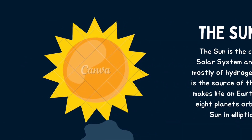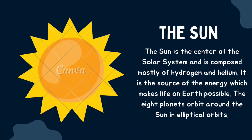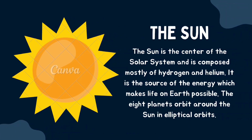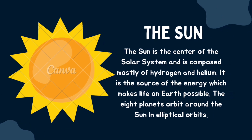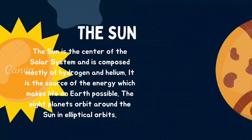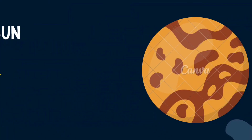Now let's learn about the sun. The sun is the center of the solar system and is composed mostly of hydrogen and helium gas. It is the source of energy that makes life on Earth possible. The eight planets orbit around the sun in elliptical orbits.